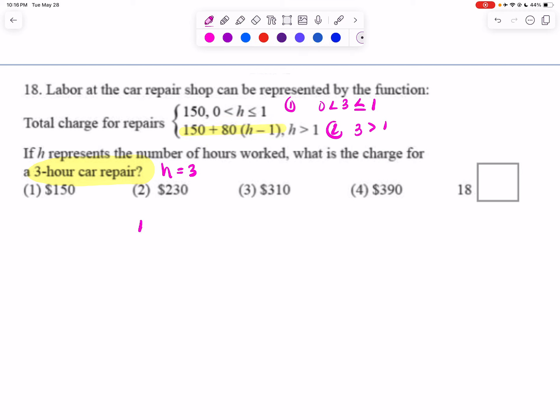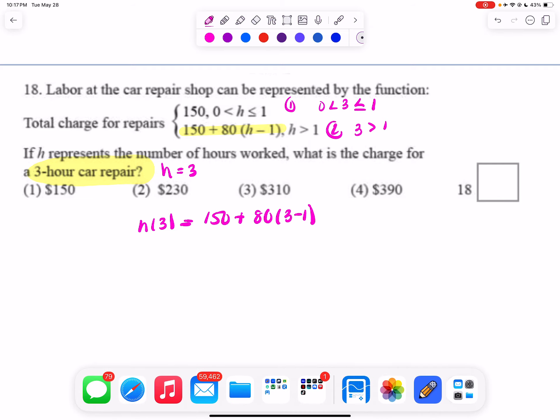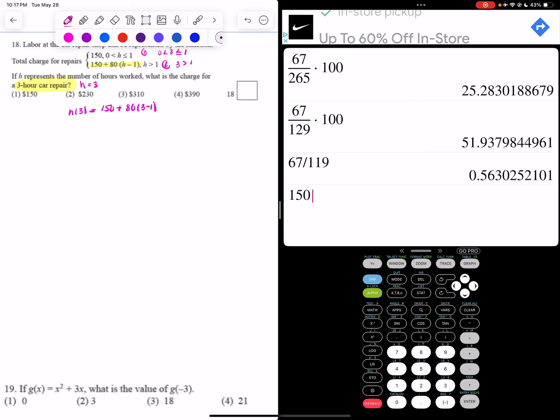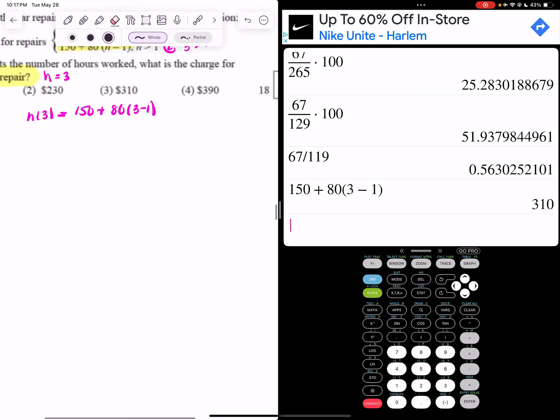So when I do h of 3, I'm going to do 150 plus 80 times 3 minus 1. Now I'm just going to go to my calculator and type that in exactly as it's written. So 150 plus 80 times 3 minus 1, and then hit enter, and I get 310.